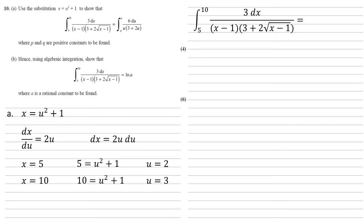So we can now take our original integral, replace the 5 and the 10 with the 2 and the 3, replace dx with 2u du, and replace the x with u squared plus 1, giving us this.